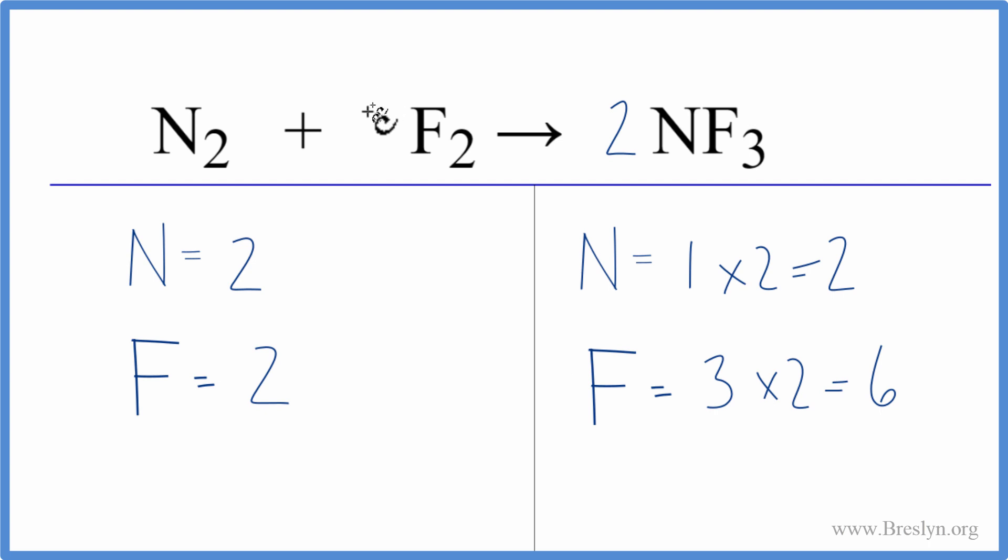And that's good because if we put a three as our coefficient here in front of F2, two times three, that gives us six and we're done. This equation is balanced.